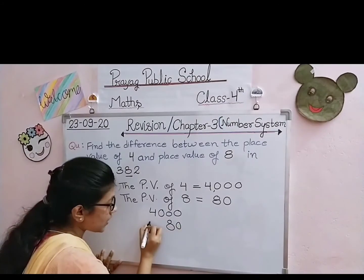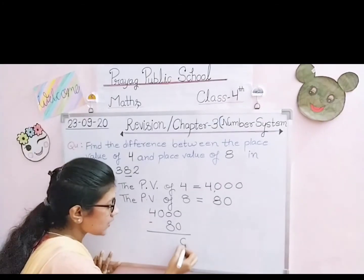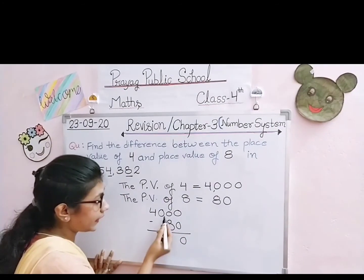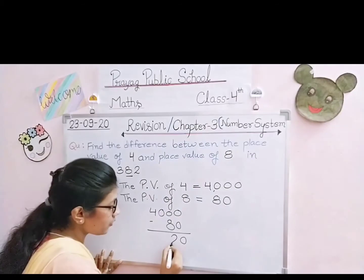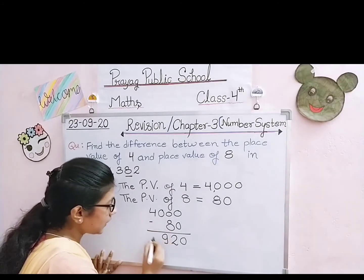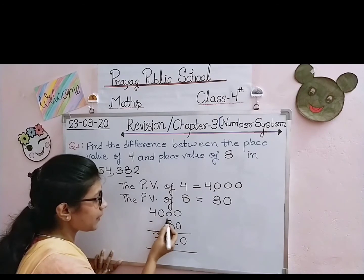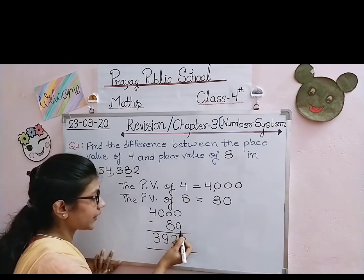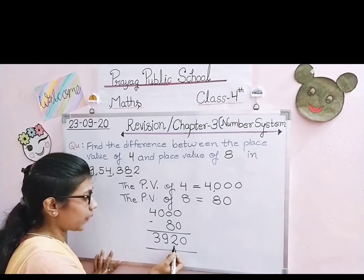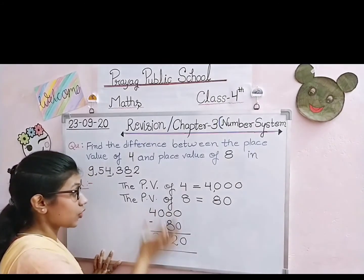अब subtraction: greater number में से smaller number का — 4,000 में से 80 को subtract करेंगे। 0 - 0 = 0। Tens column में: borrow करना होगा — 10 - 8 = 2। Hundreds column में: 9। Thousands column में: 3। तो हमें result मिला 3,920। 4,000 में से 80 को subtract करने पर result 3,920 आया। This is our result, the question is completed।